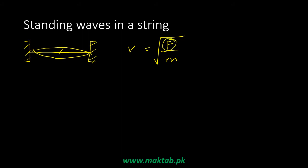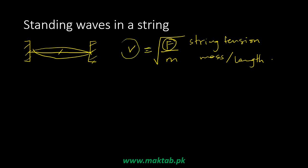What is F? It is the tension in the string. And what is m? It is the mass per unit length of the string. So the tension in the string divided by the mass per unit length, under the square root, gives you the speed of the standing waves.